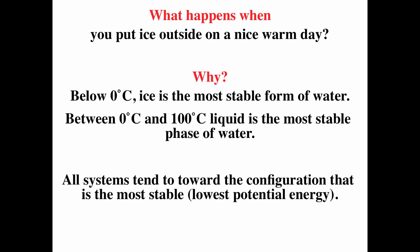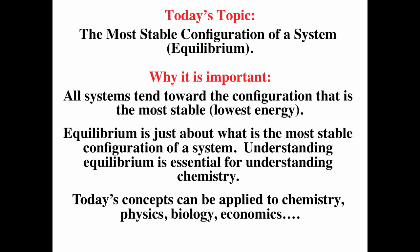Simply, ice is the most stable form below zero degrees Celsius, and liquid is the most stable form between zero and 100 degrees Celsius. All systems tend towards the configuration that is the most stable — the lowest potential energy, or the lowest Gibbs free energy. So this video is about the most stable configuration of a system, or equilibrium.